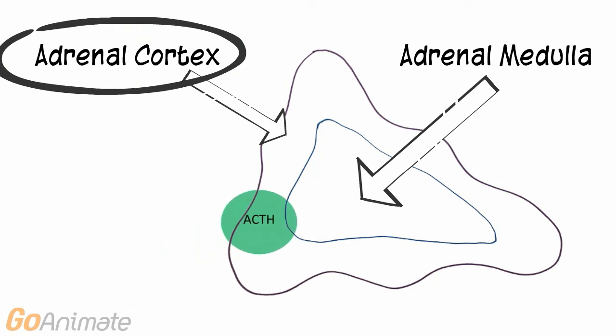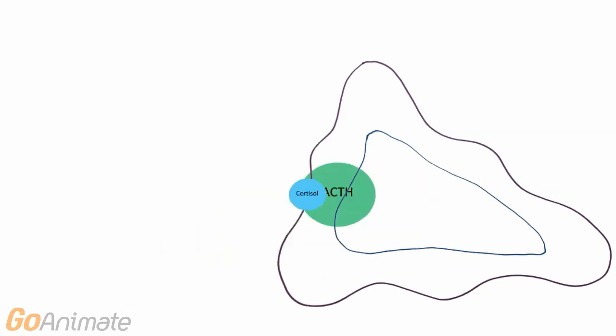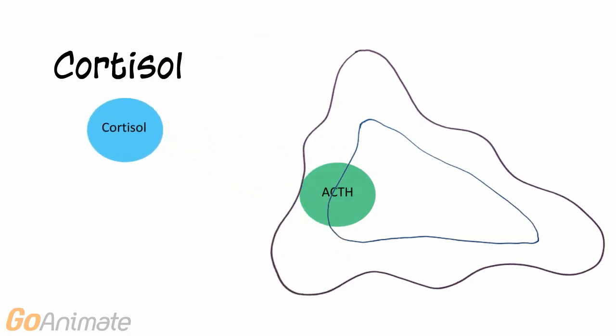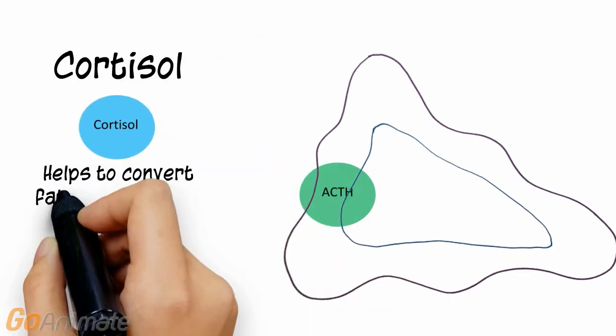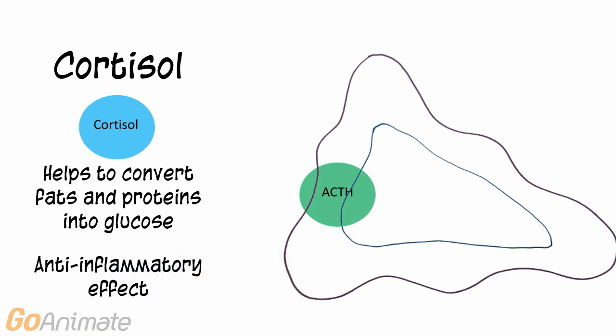ACTH targets the adrenal cortex. ACTH facilitates the release of cortisol from the adrenal cortex. Cortisol has an effect on blood glucose by facilitating the conversion of fats and proteins into glucose. Cortisol also has an anti-inflammatory effect.